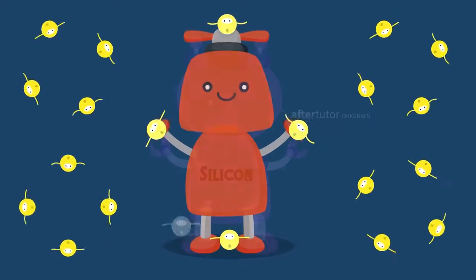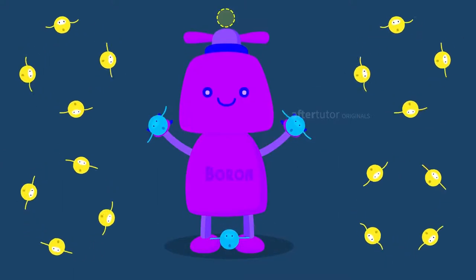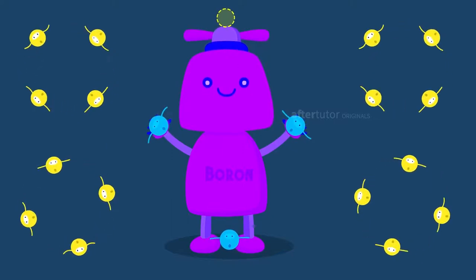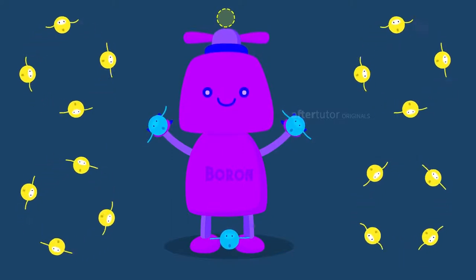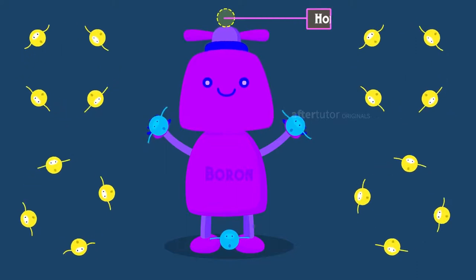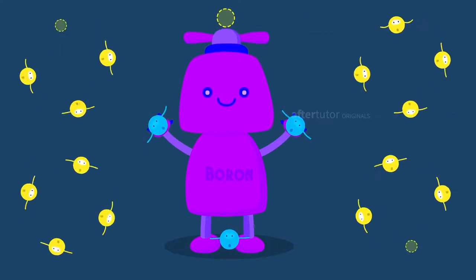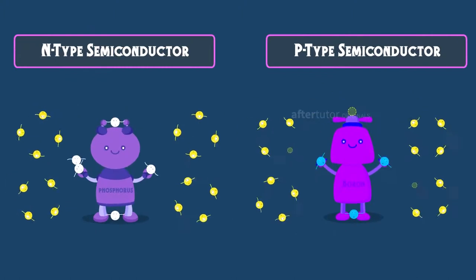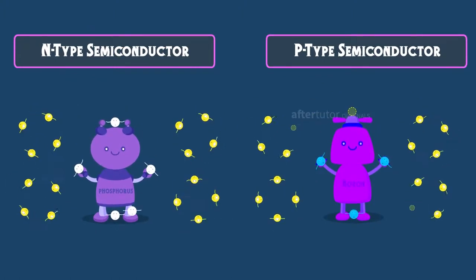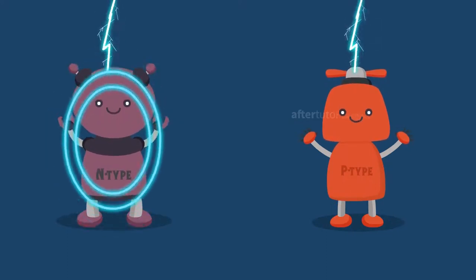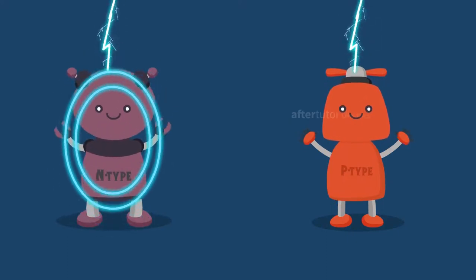Similarly, for the P-type semiconductor, a trivalent impurity, boron, is doped into the silicon structure, which has three electrons. By this process, it creates an extra hole, and the holes are the majority carriers in the P-type. Meanwhile, in the N-type semiconductor, as the electrons are the majority carriers, the conduction of electric current is more in the N-type compared to the P-type semiconductors.